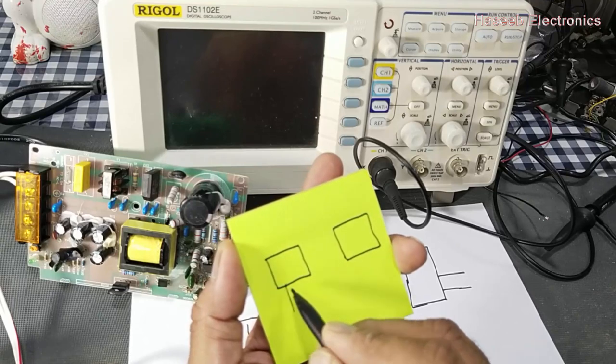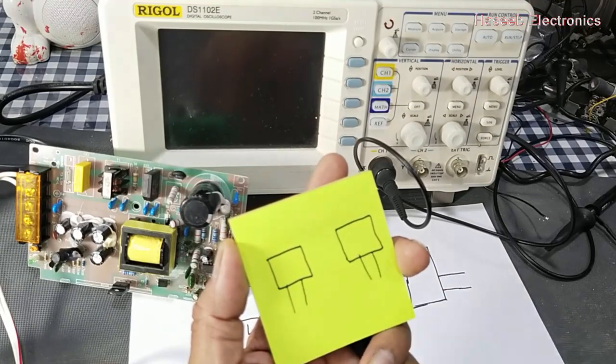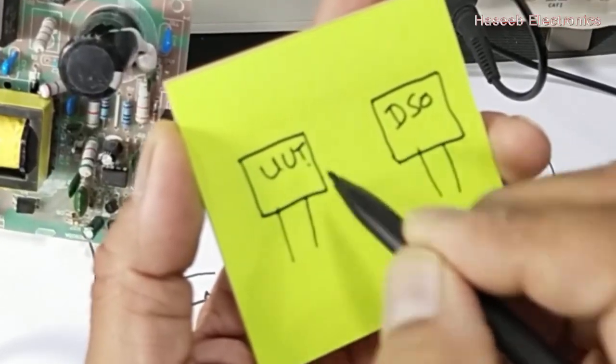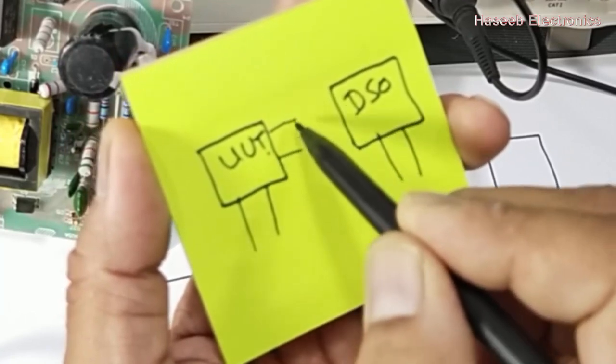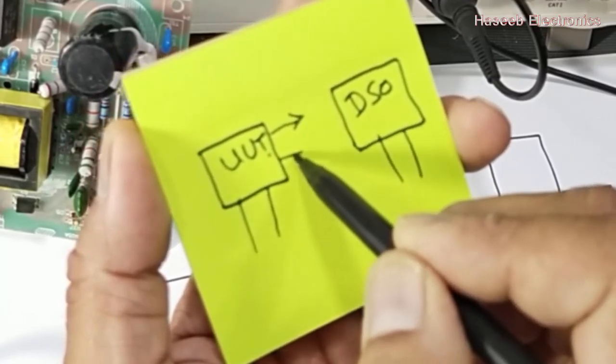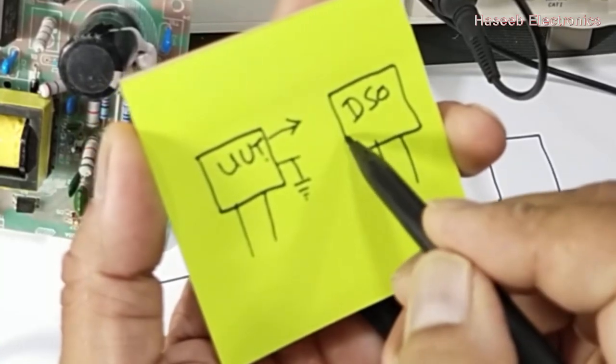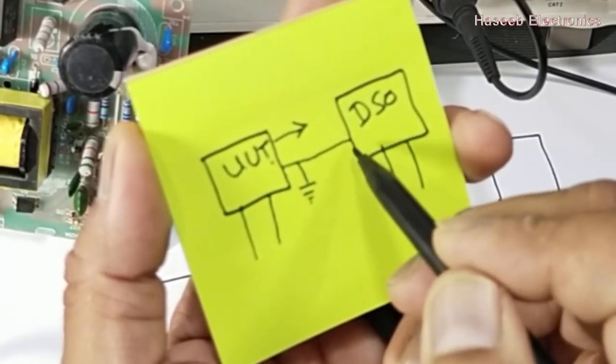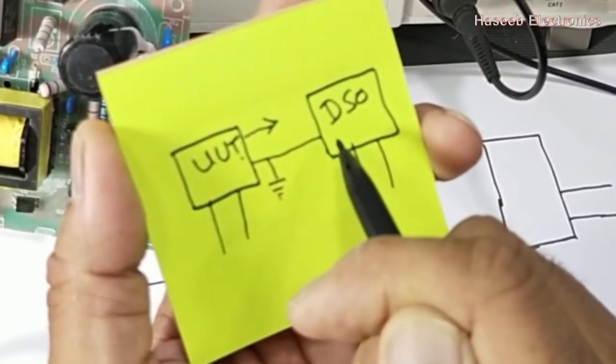Two points to be considered: one is the unit under test, the second is the DSO oscilloscope. Both require line voltage and the unit under test is giving some signal out with a return path.